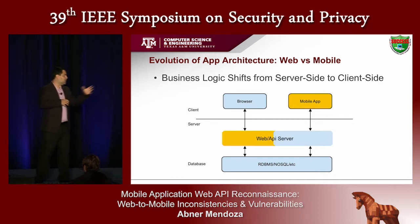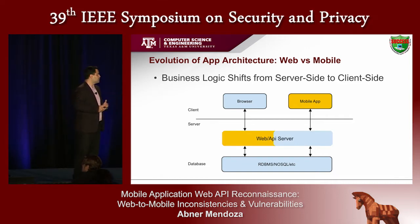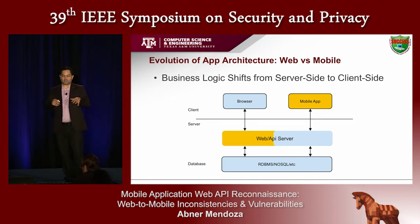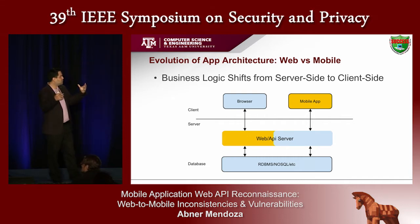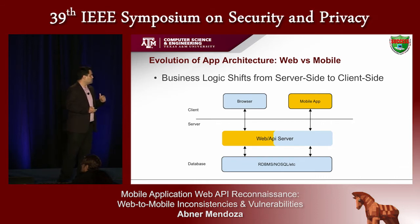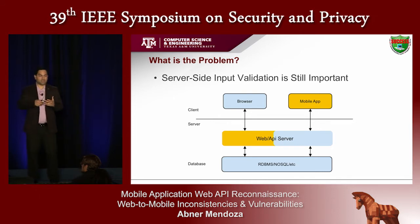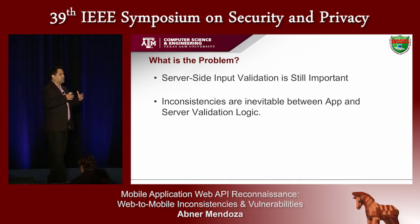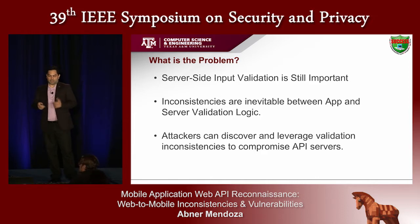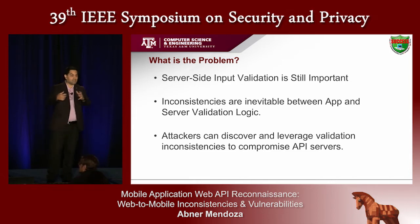In fact, the web and API server I show here are one and the same. In this work, we focus on the difference between the logic implemented on the mobile app and what's implemented on the server, and of course we expect some consistency there. The problem we highlight is that server-side input validation is still important, although business logic has shifted. Inevitably, with this integration of mobile and web, inconsistencies will appear, and attackers can discover and leverage these validation inconsistencies to compromise the server side.